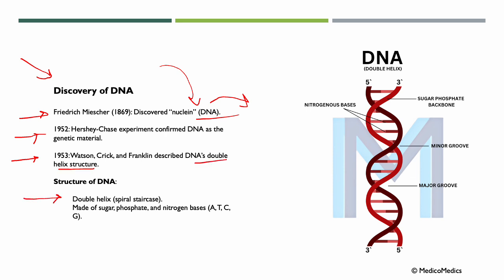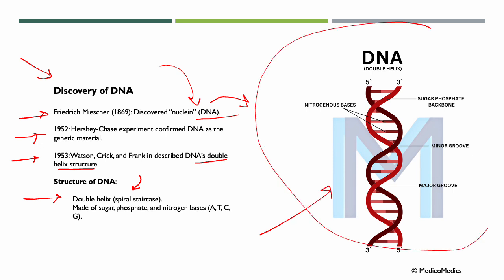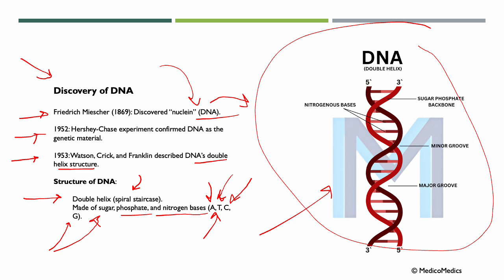The structure of DNA, as we know it now, is a double helix — a spiral staircase, illustrated here. It is made of sugar, phosphate, and nitrogen bases, with A, T, C, G pairings: adenine, thymine, cytosine, and guanine. DNA is like a twisted ladder made of molecules; it carries the instructions for how your body grows and works.